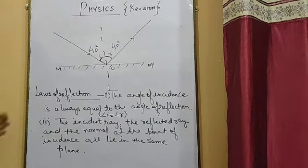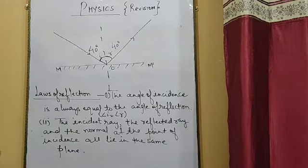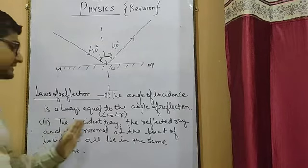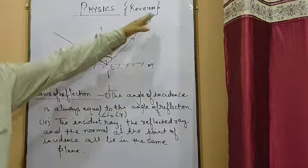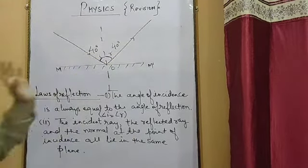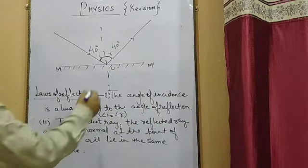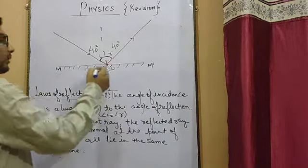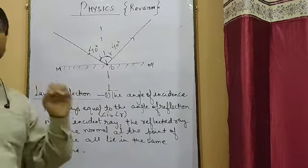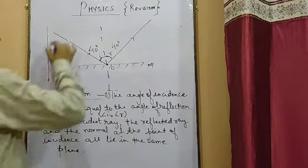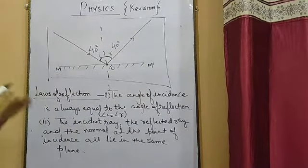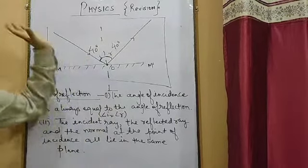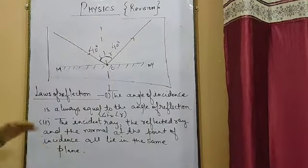We should follow these laws while drawing ray diagrams whenever required. The second law states that the incident ray, the reflected ray, and the normal at the point of incidence all lie in the same plane — that is the same piece of paper or whichever plane you are using. This is the second law of reflection.